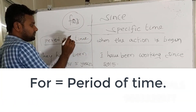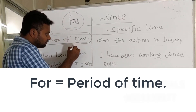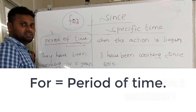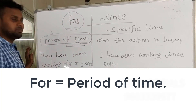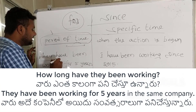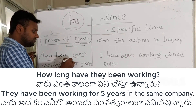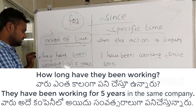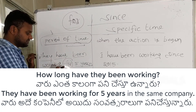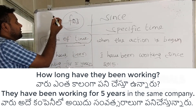So first, 'for' is a period of time. It answers the question 'how long'. See the example: they have been working for five years in the same company.